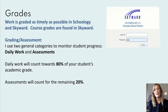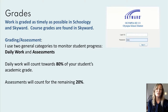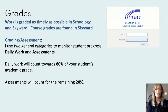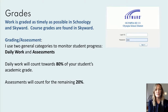Grades can be found in two places. Start at Schoology — that would be the most current view of grades. I would recommend weekly checking Skyward to see how those Schoology grades have been synced. Daily work is worth 80%, which includes assignments and effort, and 20% of your child's grade will be reflected through assessments.